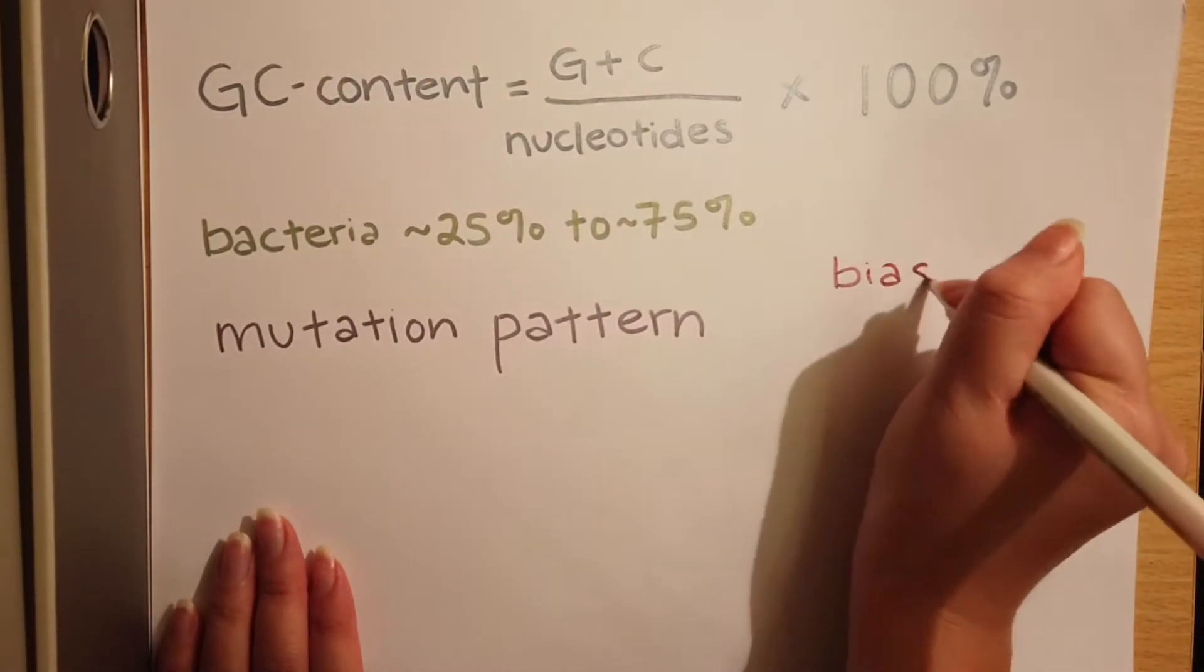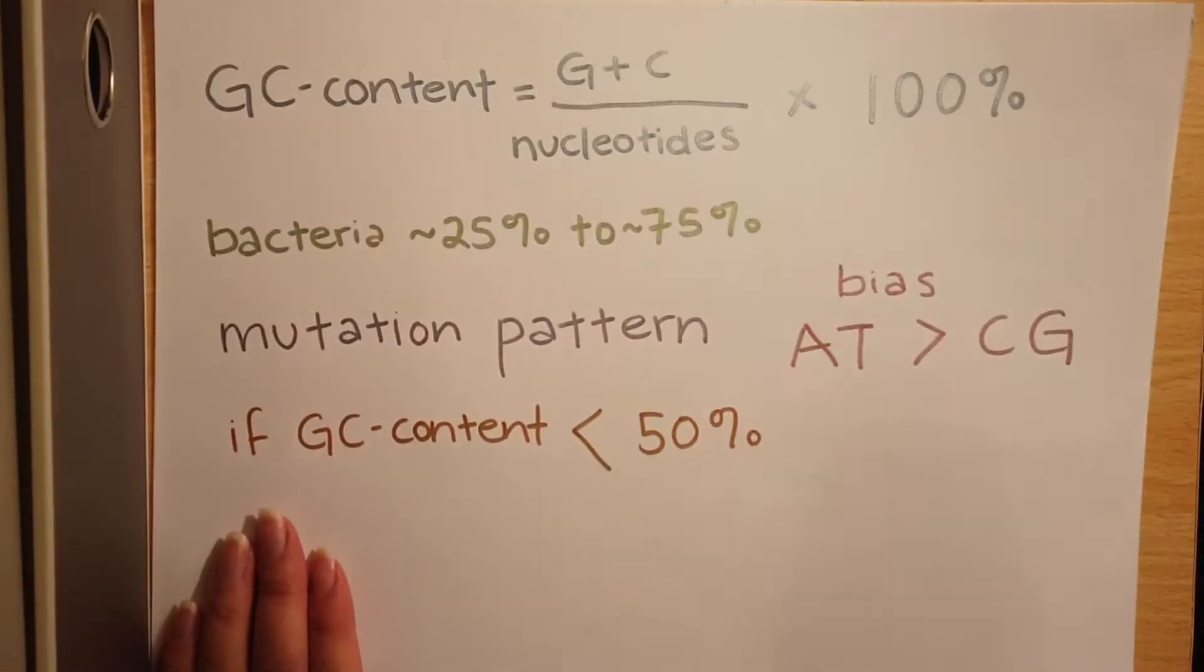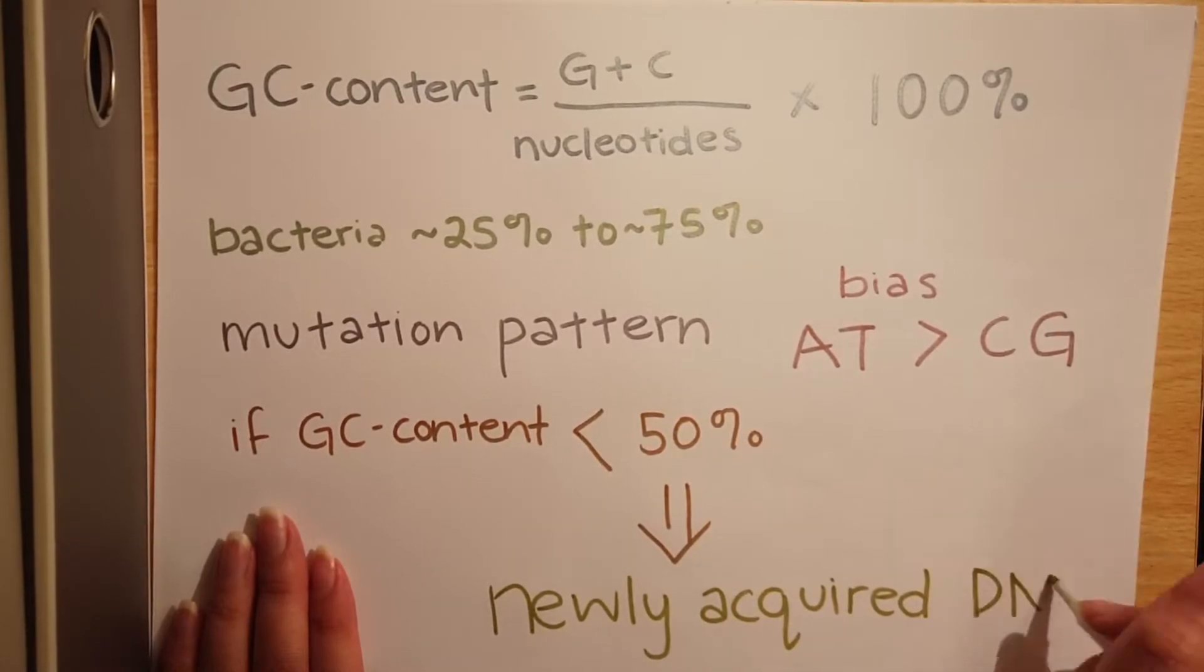Bacteria tend to have mutational bias for AT rather than GC, so certain DNA fragments that have GC content below 50% could be suggesting areas of newly acquired DNA.